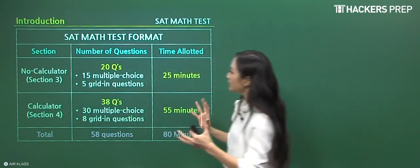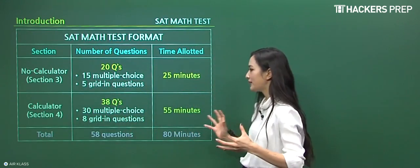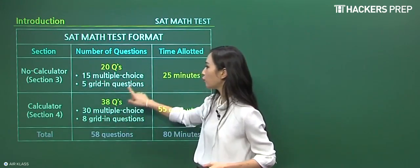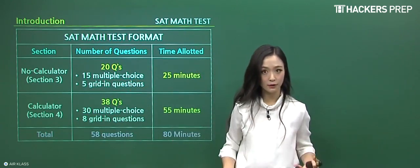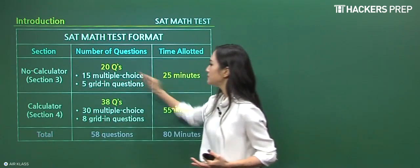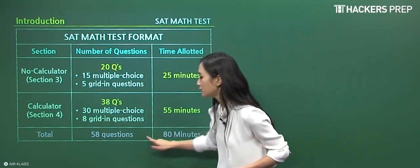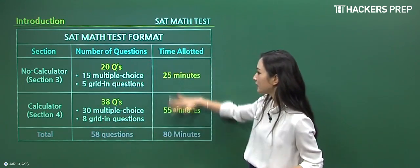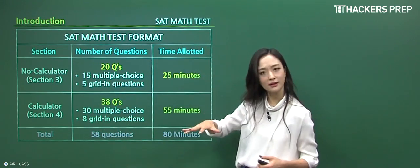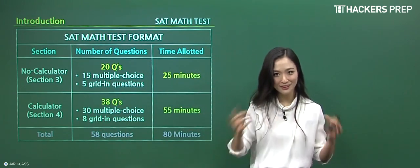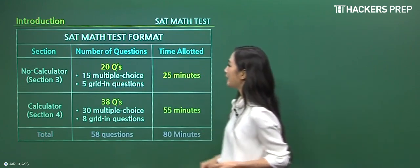So for the entire test, we can actually break it down format-wise. I already briefly went over what questions precisely comprise each section. So fifteen multiple choice, five grid-in, thirty multiple choice, and eight grid-ins, and we'll be solving a total of fifty-eight questions. And combining the two sections for the no-calc and calculator part, total of eighty minutes.